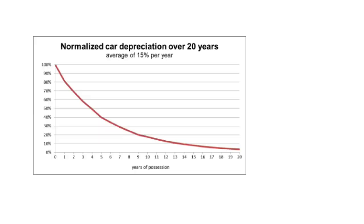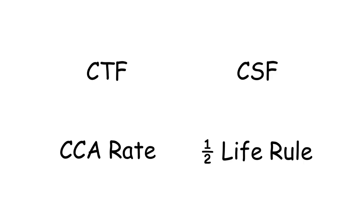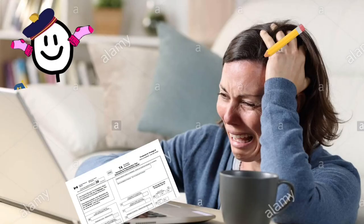Depreciation is an accounting method of allocating the cost of an asset over its life expectancy to represent how much of its value has been used up over time. It was personally one of the easiest units to grasp, considering that I don't actually know what appreciation feels like. Taxes: this unit reviews various accounting practices and techniques that organizations employ to save money on the bottom line, from the capital tax factor to the capital savings factor to the CCA rate and half-life rule. It's really just taught to set up the expectation that taxes are overly complicated and never get easier to understand as you age — just ask your parents the next time they're crying while filing their T4s.